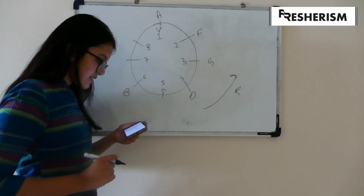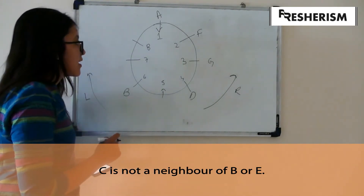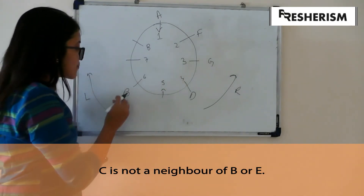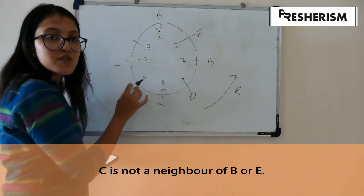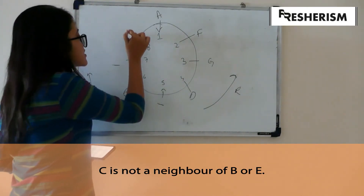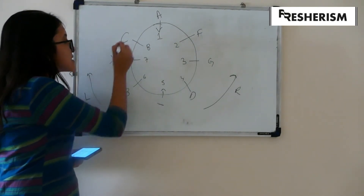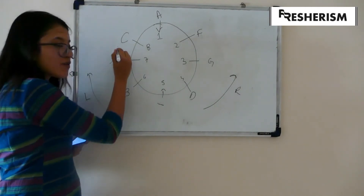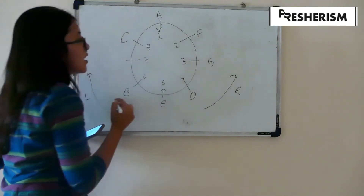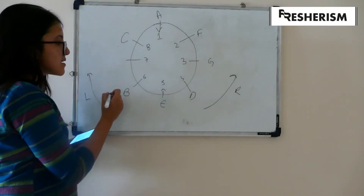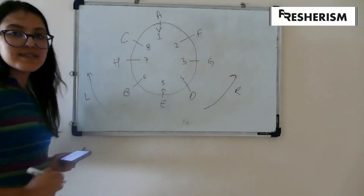Our last condition says that C is not a neighbor of B or E. Neighbors of B would be this and this. Hence, the only position left is this, therefore C will sit here. Now, E can't be placed over here because C is not a neighbor of E. Hence, E sits over here. Now the only person left is H, therefore H will sit here.